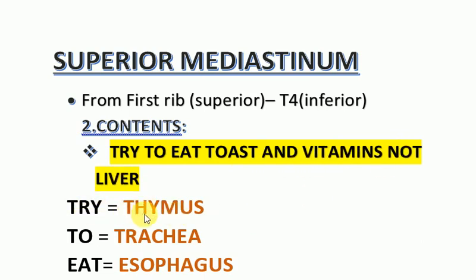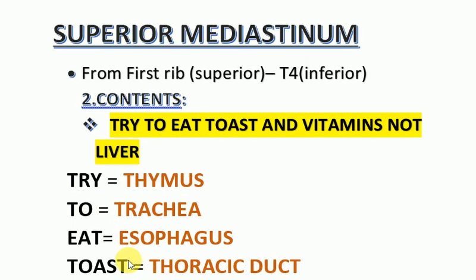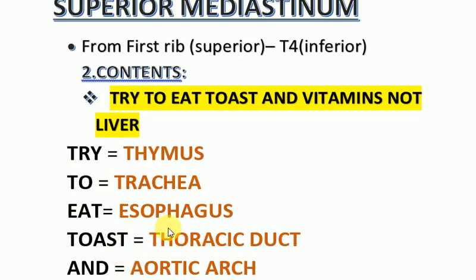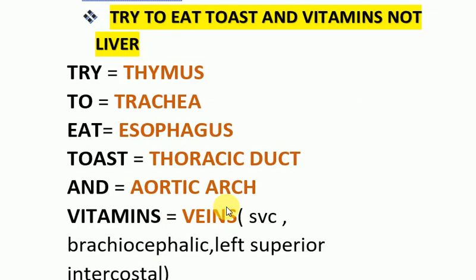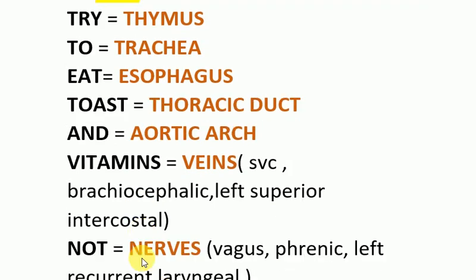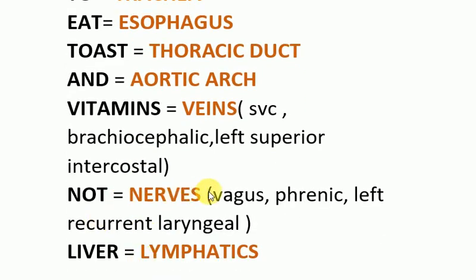In the mnemonic 'Try to eat toast and vitamins, not liver': T for thymus, T for trachea, E for esophagus, toast for thoracic duct and aortic arch, V for veins — these are the superior vena cava, brachiocephalic, and left superior intercostal veins — N for nerves, including the vagus nerve, phrenic nerve, and left recurrent laryngeal nerve, and L for lymphatics.